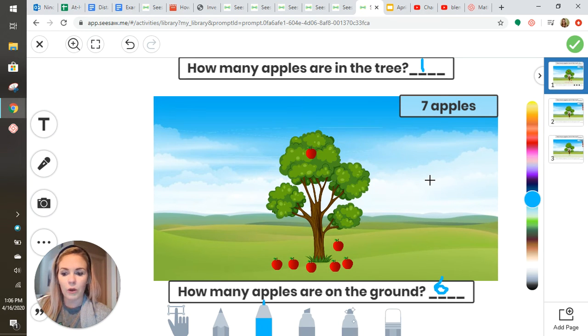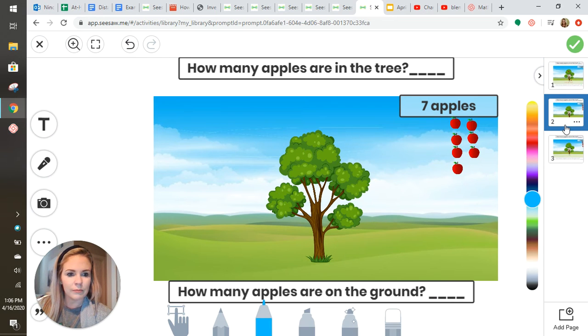When you've come up with one combination, click the next slide on the right that has a number two. It should save your first answer.